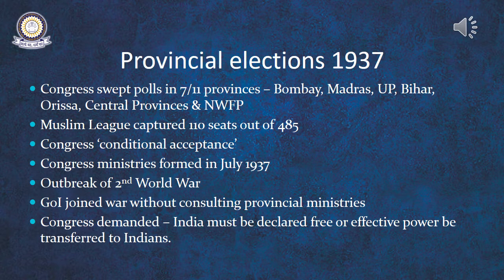After the outbreak of the Second World War on 1st September 1939, the Government of India immediately joined the war without consulting the provincial ministries or the Congress who were controlling the provinces. Although Congress was in sympathy with the victims of fascism, they raised a pertinent question — how was it possible for an enslaved nation to aid others in their fight for freedom? They therefore demanded that India must be declared free or at least effective power be transferred to Indians. The British refused, and therefore Congress asked its ministries to resign, and a call for limited Satyagraha was given by Gandhi in October 1940, ending the 28-month reigning period of Congress in the provinces.